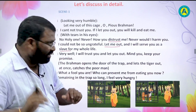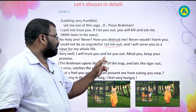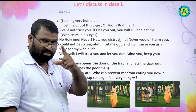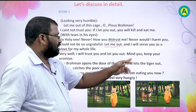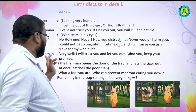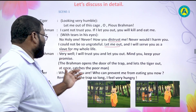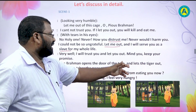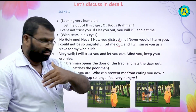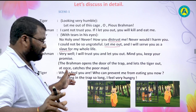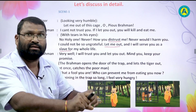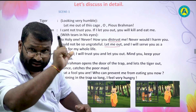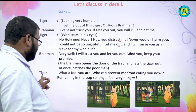Then Brahman says: 'Very well. I will trust you and let you out. Mind you, tiger, keep your promise.' Then what does Brahman do? Brahman opens the door of the trap and lets the tiger out. At once, tiger catches the poor man. Who catches the poor man? Tiger catches the poor man.